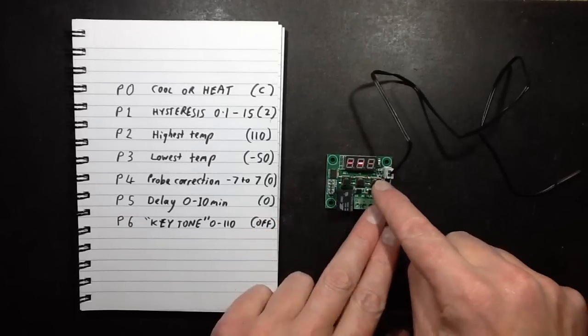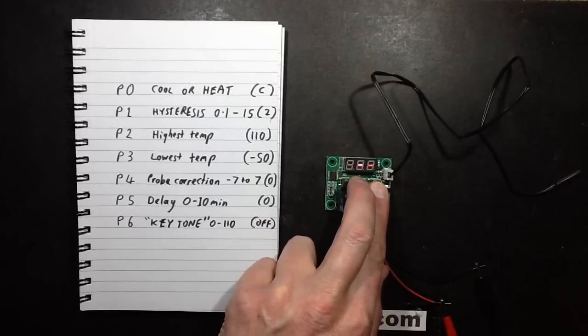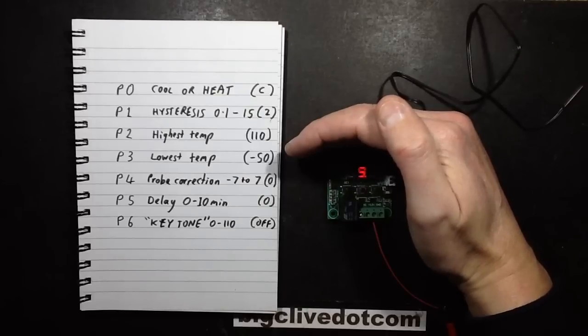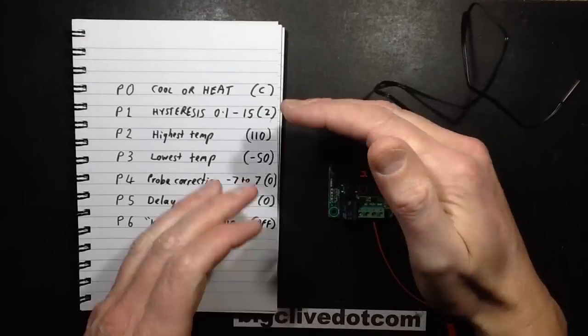So if you hold plus and minus down together in this, and you turn it off, turn it on, it displays all eights. And that's it back. That's it unbricked. It's reset all the defaults.